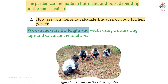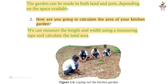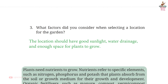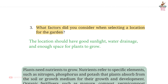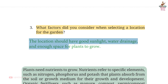Question 2: How are you going to calculate the area of your kitchen garden? Answer: We can measure the length and width using a measuring tape and calculate the area. Page 14, Question 3: What factors did you consider when selecting a location for the garden? Answer: The location should have good sunlight, water drainage, and enough space for plants to grow.